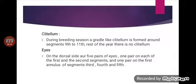Eyes: on the dorsal side there are five pairs of eyes — one pair on each of the first and second segments, and one pair on the first annulus of each of the third, fourth, and fifth segments.